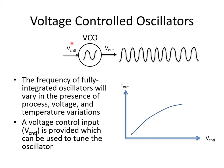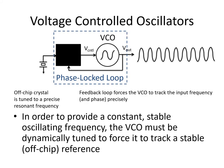Or we can use a fully integrated oscillator circuit but provide a tuning input. The most common case is where the tuning control knob is a control voltage, labeled V-control. This control input is used to control the oscillating frequency produced by the oscillator. The resulting circuit is called a voltage-controlled oscillator, or VCO for short. In order to provide a constant, stable oscillating frequency in the VCO, we have to dynamically tune it to track a stable off-chip reference, shown here as a crystal.